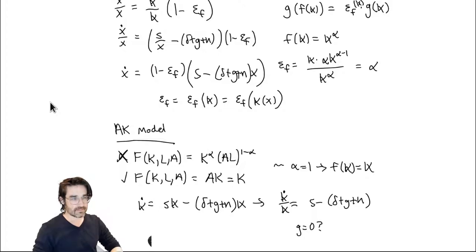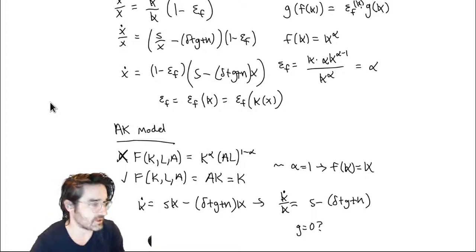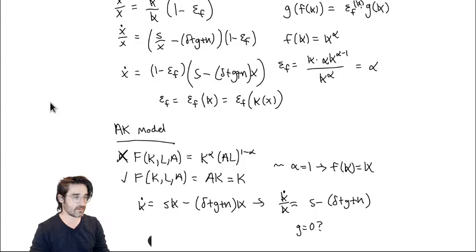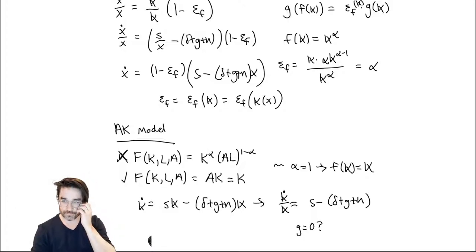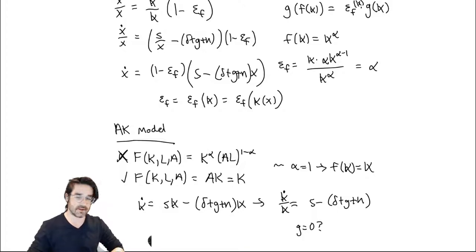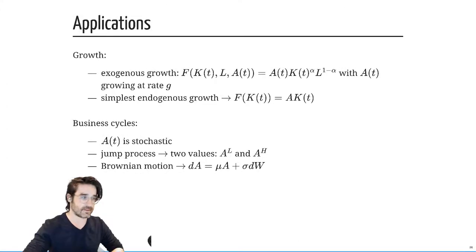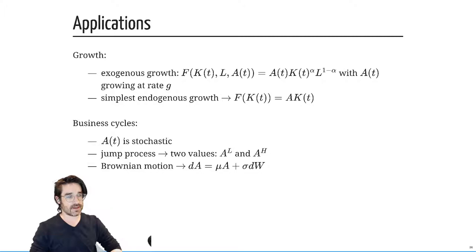That's interesting as a curiosity, though in reality there probably are decreasing returns to scale. In terms of business cycles, you can put in a stochastic A — technology shocks affecting the economy — which affects output, investment, and so on. You can do jump processes for regime switching, or more continuous Brownian motion evolution — we'll do stochastic calculus later on.